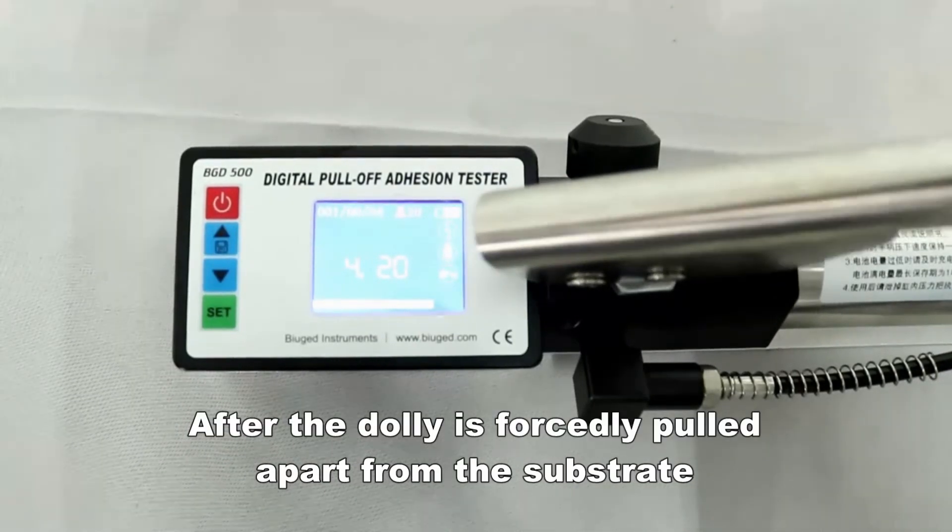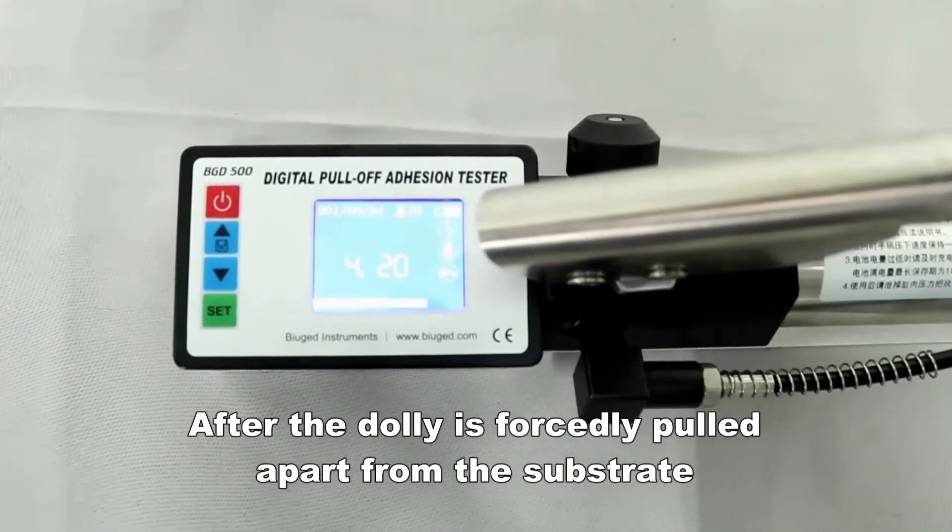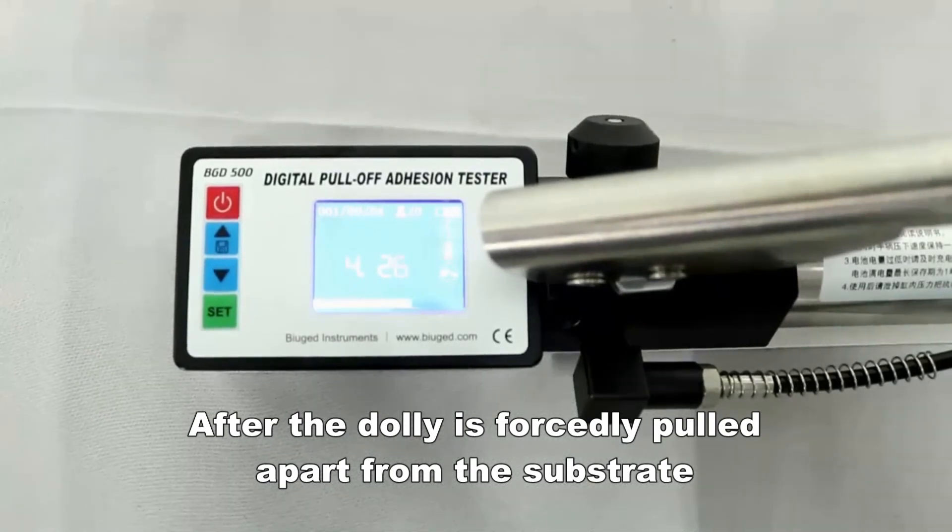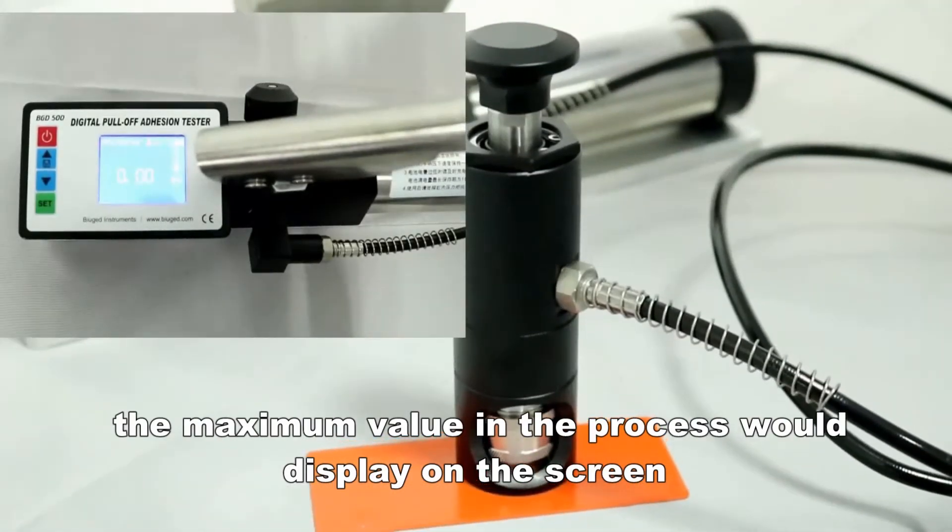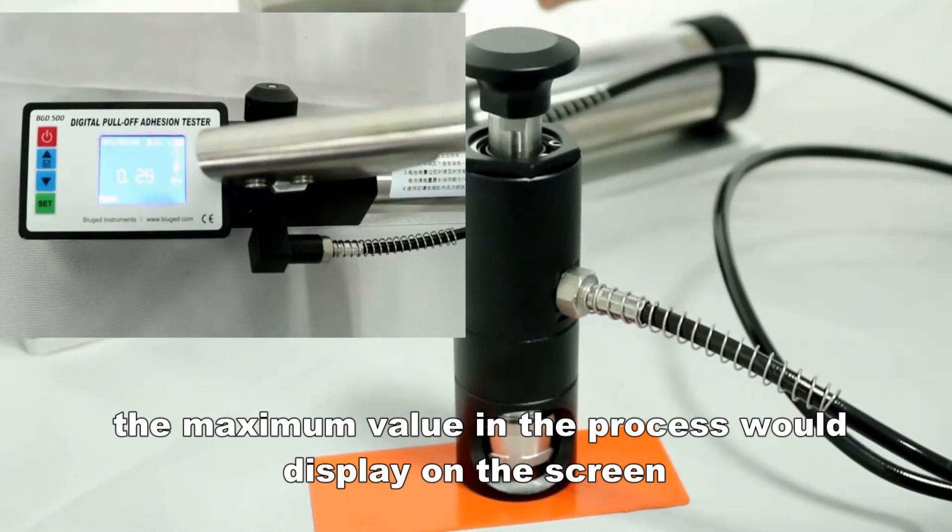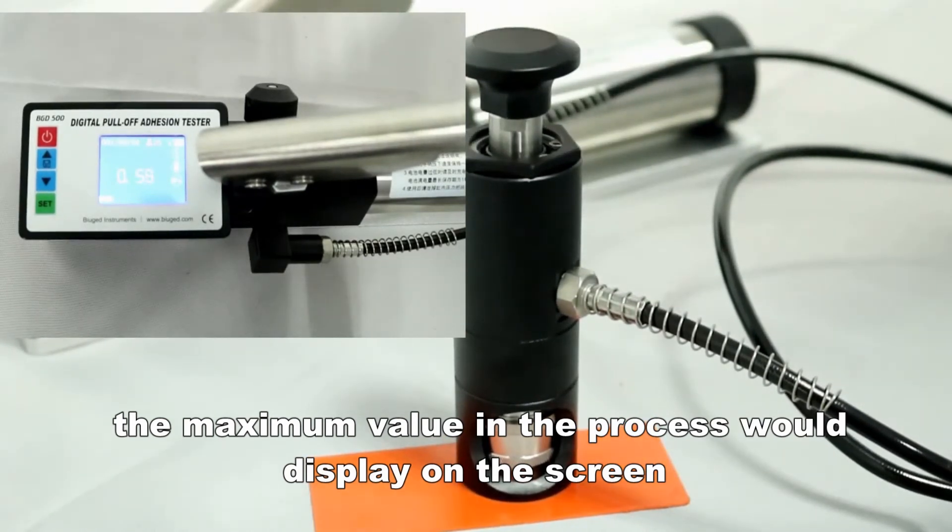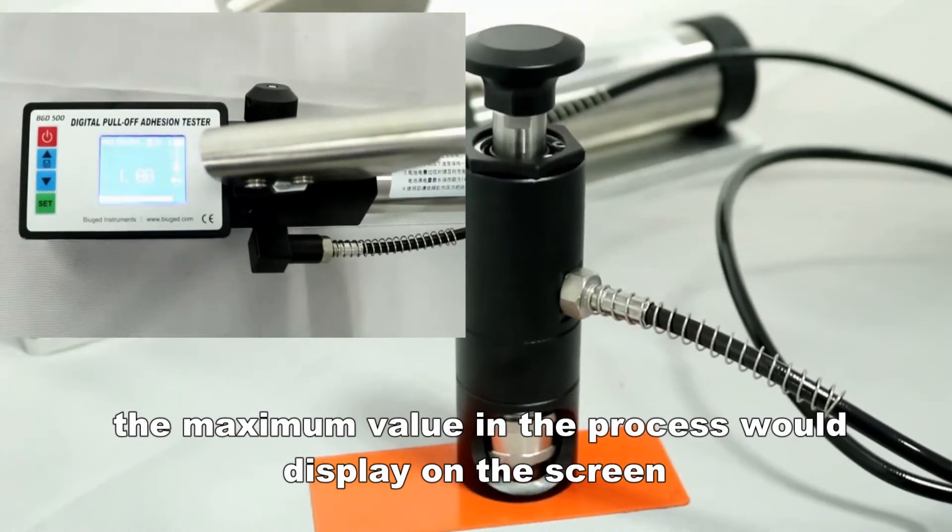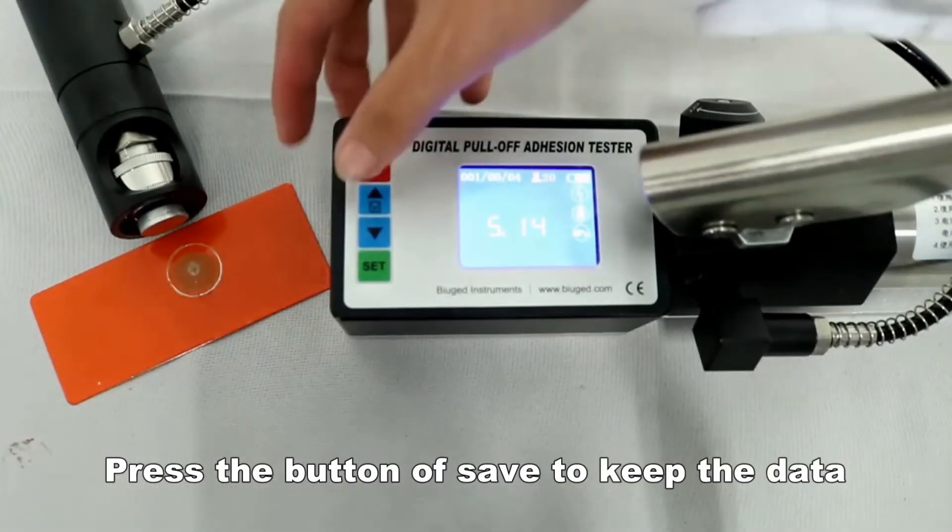After the dolly is forcibly pulled apart from the substrate, the maximum value in the process would display on the screen. Press the save button to keep the data.